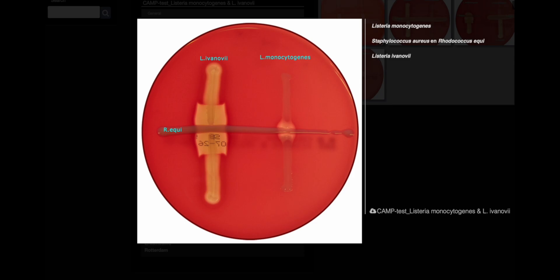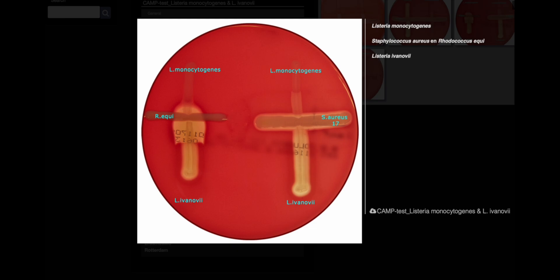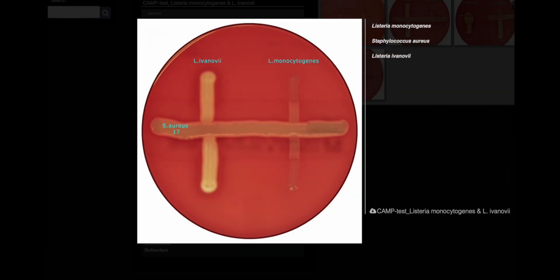These two streaks L. monocytogenes, and to a lesser extent L. seeligeri, show enhanced hemolysis near S. aureus, while L. ivanovii exhibits increased hemolysis close to the R. equi streak. It's worth noting that the CAM test's reliability has its limitations.